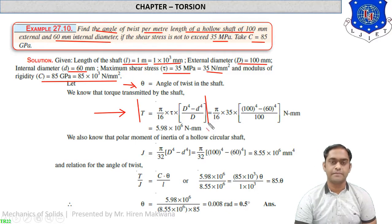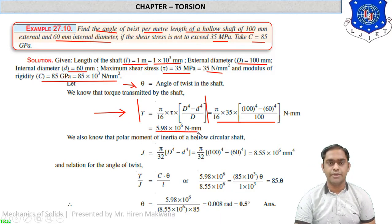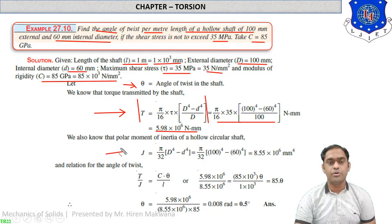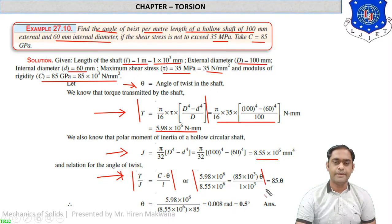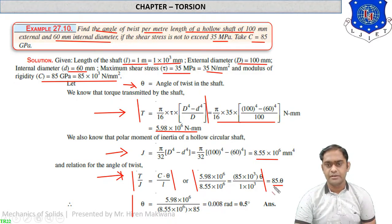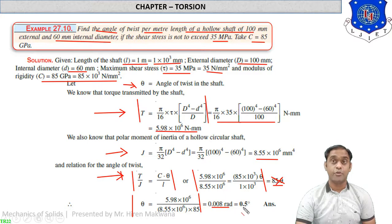First calculate torque: T = (π/16) × τ × (D⁴ − d⁴) / D = 5.98 × 10⁶ N·mm. Then calculate polar moment of inertia: J = (π/32) × (D⁴ − d⁴) = 8.55 × 10⁶ mm⁴. Using T/J = Gθ/L, substitute all values. Only θ is unknown; simplifying gives θ = 0.008 radians.